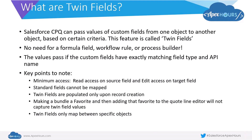Finally, and most importantly, twin fields only map between specific objects. Now we'll go to the org and look at an example of how twin fields work, and then we will go through the listing of the objects between which twin fields map.